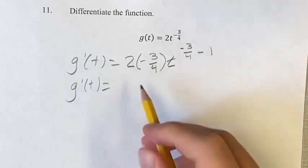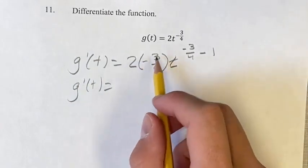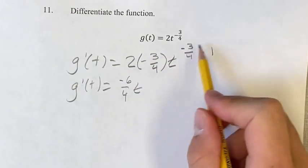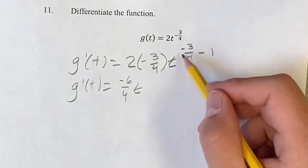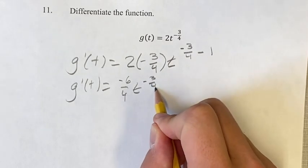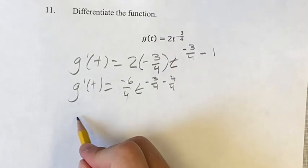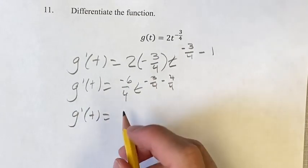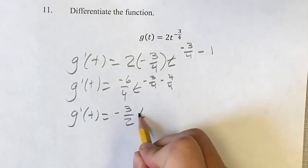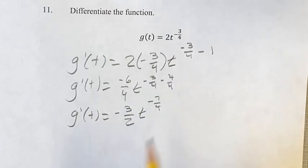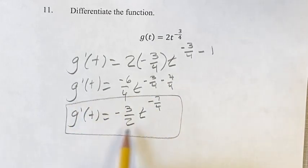Now we can simplify. 2 times negative 3 fourths gives us negative 6 over 4. For the exponent, we convert 1 to 4 over 4, so it becomes negative 3 over 4 minus 4 over 4, which is negative 7 over 4. Reducing negative 6 over 4 by dividing top and bottom by 2 gives negative 3 halves. So the derivative of g of t is negative 3 halves t to the negative 7 fourths. That's your final answer.